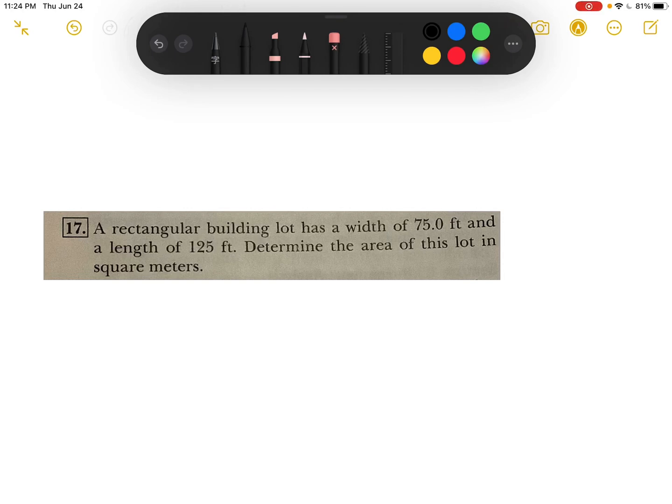Hey everyone, today we're going to solve a physics problem. Here's the question: we need to find the area of the lot in square meters. What we can do is convert the width and the length to meters and then multiply them together. It will be the easiest way. So, 75 feet